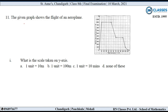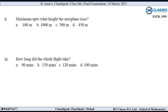11th question: The given graph shows the flight of an aeroplane. X-axis पे time in minutes है और Y-axis पे meters above the ground। First sub-question: What is the scale taken on Y-axis? Y-axis पे gap है 100-100 का, so one unit is equal to 100 meters. So this is option B.